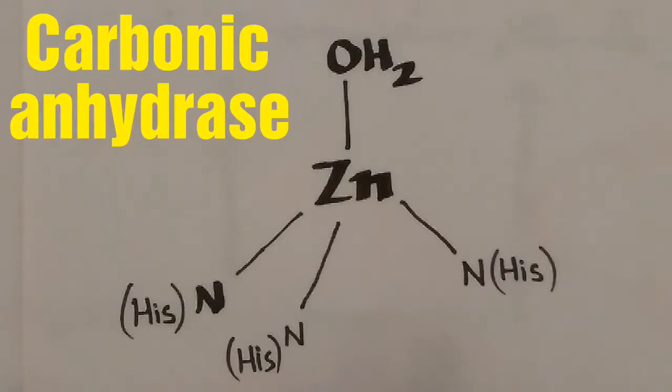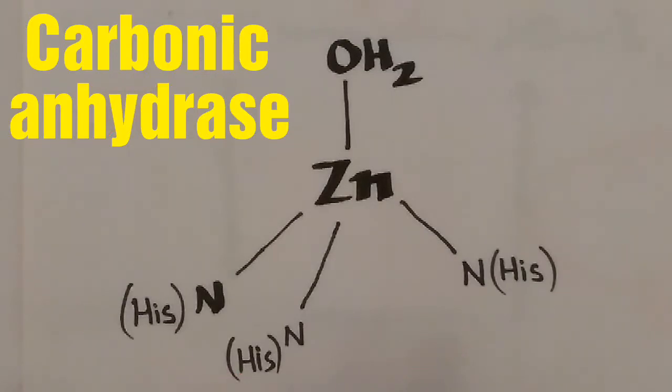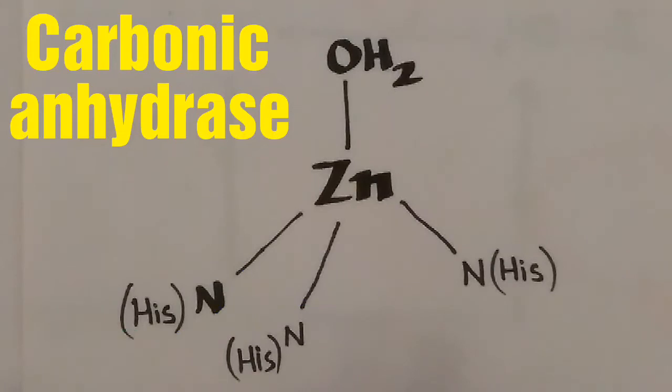Let us study in detail about carbonic anhydrase. This is the active site of carbonic anhydrase with 3 histidine units, a water molecule, and a tetrahedrally coordinated zinc ion.